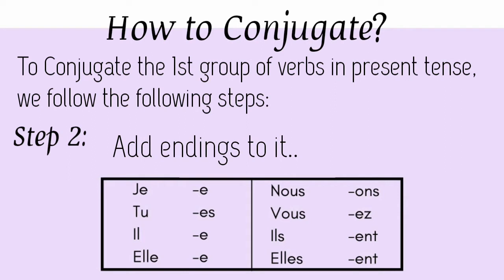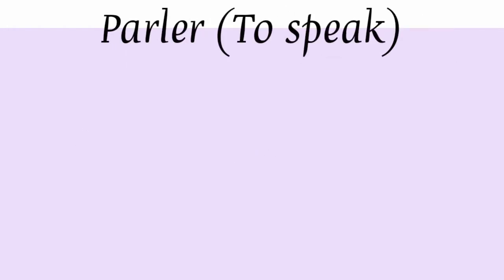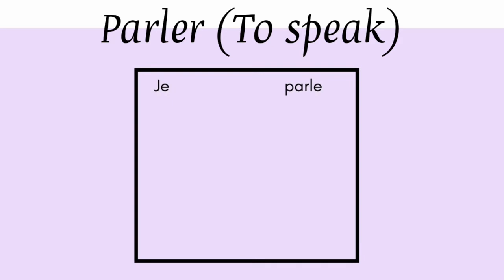Let's try to conjugate the verb parler, which means 'to speak.' With je, parler becomes 'je parle' with an E at the end. 'Tu parles' with ES at the end, as you can see on the screen. 'Il parle', 'elle parle'.